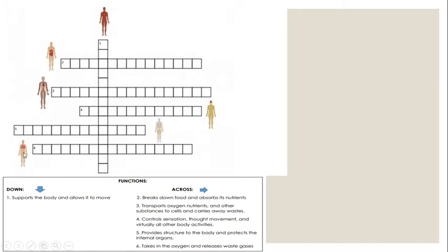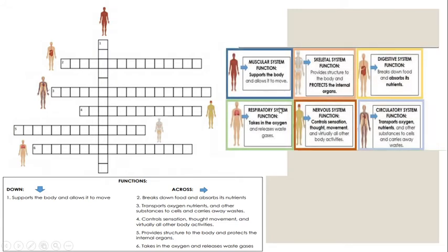Six. This is a crossword with down and across clues. Let's do number one together. We have here the functions.